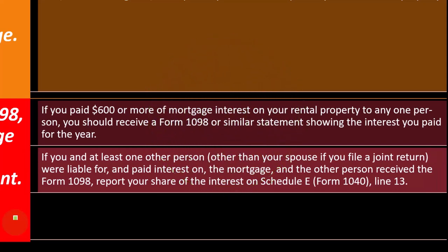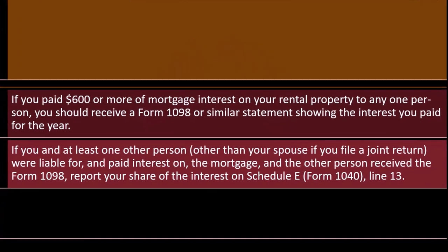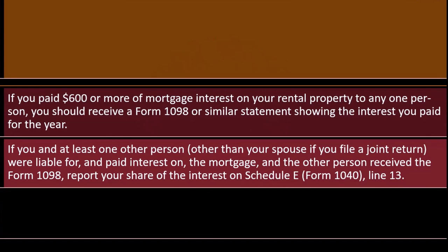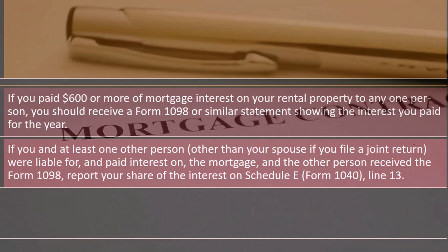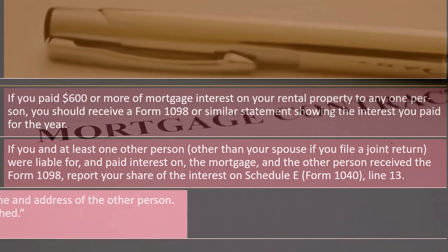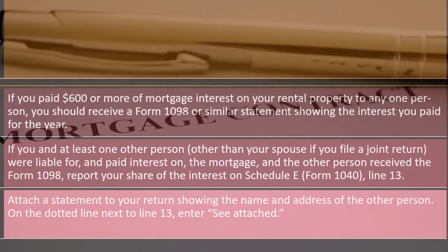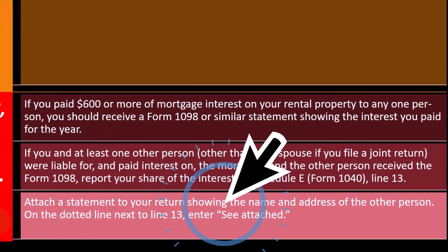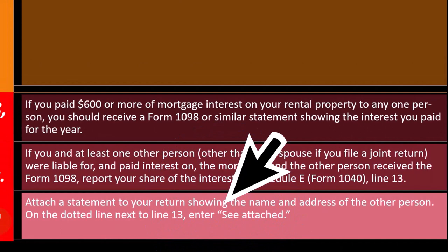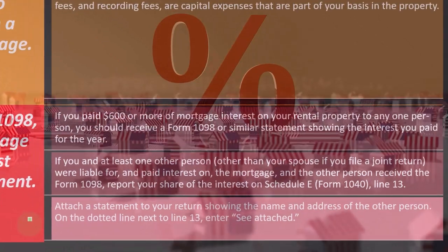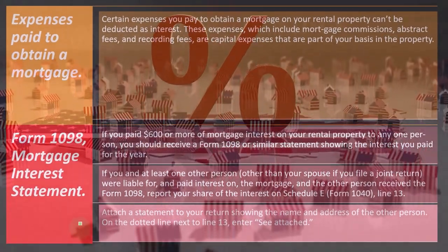If you and at least one other person, other than your spouse if you file a joint return, were liable for and paid interest on the mortgage, and the other person received Form 1098, report your share of interest on Schedule E, Form 1040, Line 13. Attach a statement showing the name and address of the other person and enter 'See attached' on the dotted line next to Line 13. You have to tell the IRS your portion of the mortgage interest and that the 1098 was reported to the other person.